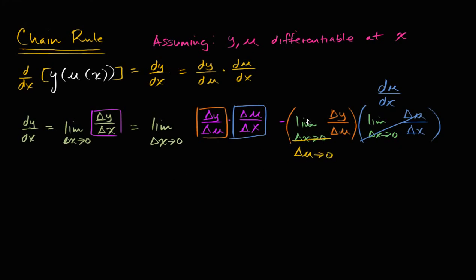And when we rewrite it like that, well then this is just dy/du — the derivative of y with respect to u. So just like that, if we assume y and u are differentiable at x — or you could say that y is a function of u which is a function of x — we've shown in fairly simple algebra, using some assumptions about differentiability and continuity, that it is indeed the case that the derivative of y with respect to x is equal to the derivative of y with respect to u times the derivative of u with respect to x. Hopefully you find that convincing.